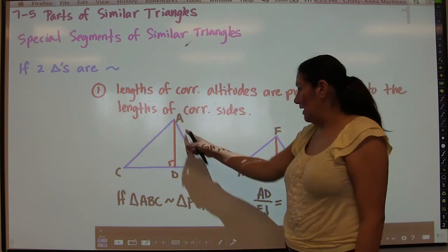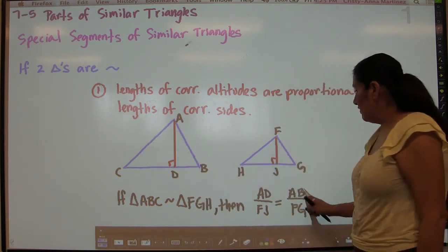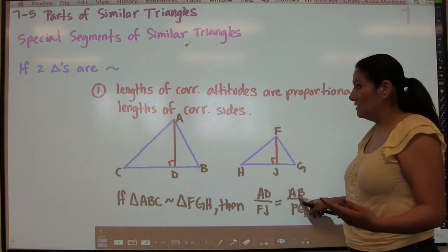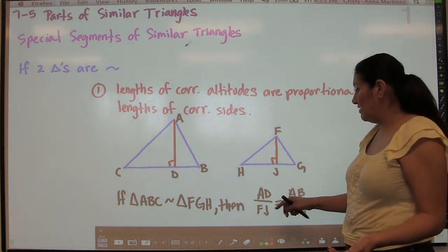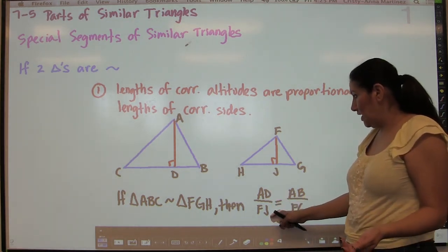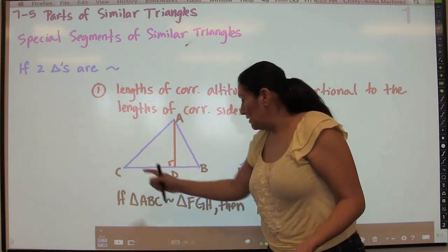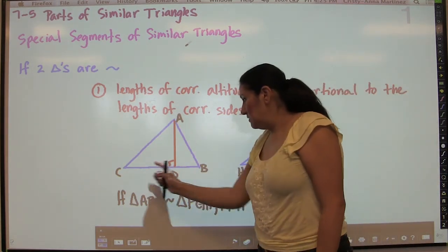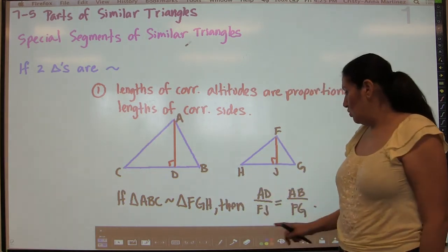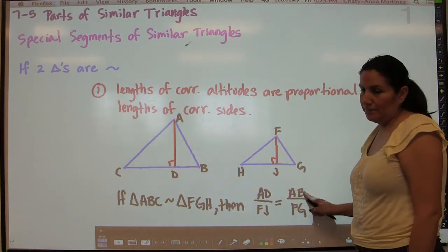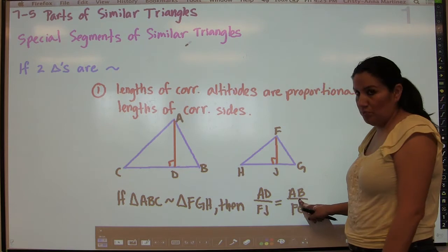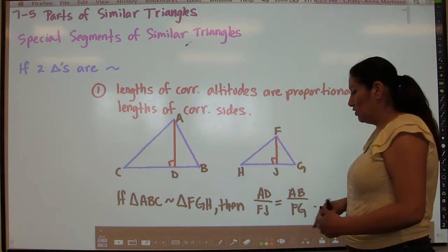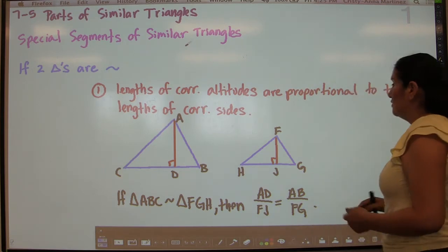This could change because every triangle has three sides. As long as it's a corresponding side, you're fine. So AD to FJ could equal AC to FH, or BC to GH. This second piece of the proportion could change with any of the three sides, as long as they're corresponding sides. That's the first theorem.